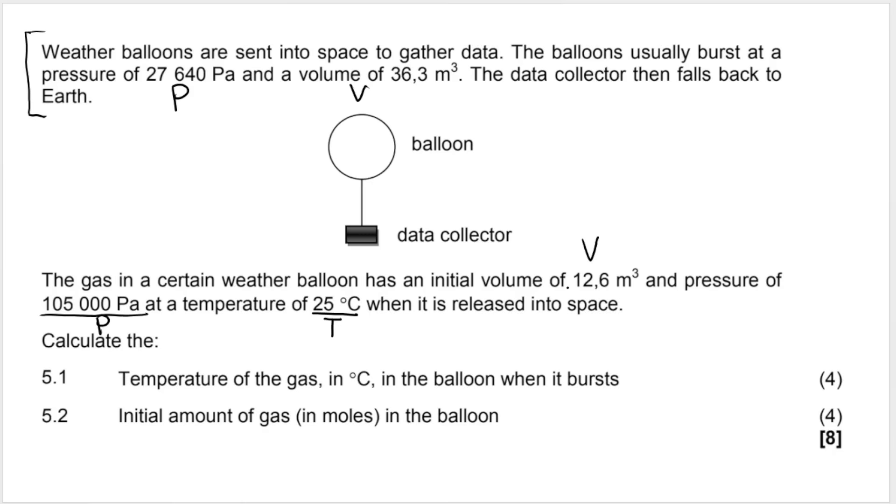This scenario is speaking about the conditions under which the balloon will burst. This scenario here is giving me an initial reading of pressure, volume and temperature. Let's read the question. Calculate the temperature of gas in degrees Celsius, read that very carefully, in the balloon when it bursts. Now remember we said this first bit of information here was all about when it bursts. They gave me a pressure, they gave me a volume, but no temperature.